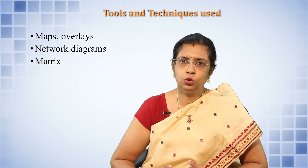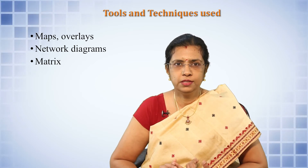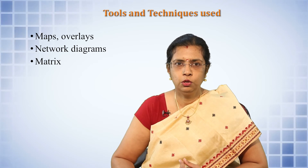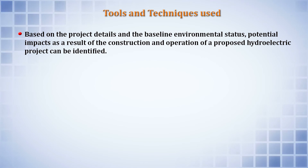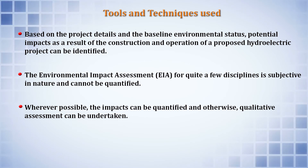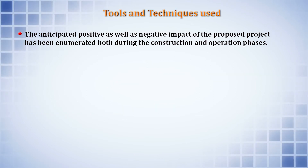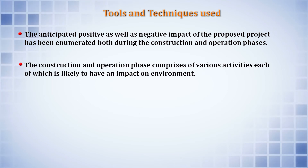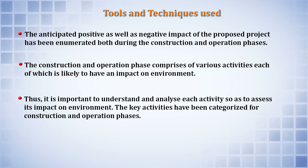Whenever an EIA assessment is being conducted, the tools and techniques to be used must also be analyzed, including maps, overlays, network diagrams, and matrices. Based on project details and the baseline environmental status, the potential impacts of the construction and operation of the proposed hydroelectric project can be identified. EIA for many disciplines is subjective in nature and cannot always be quantified; however, wherever possible, impacts can be quantified, and otherwise a qualitative assessment is undertaken.